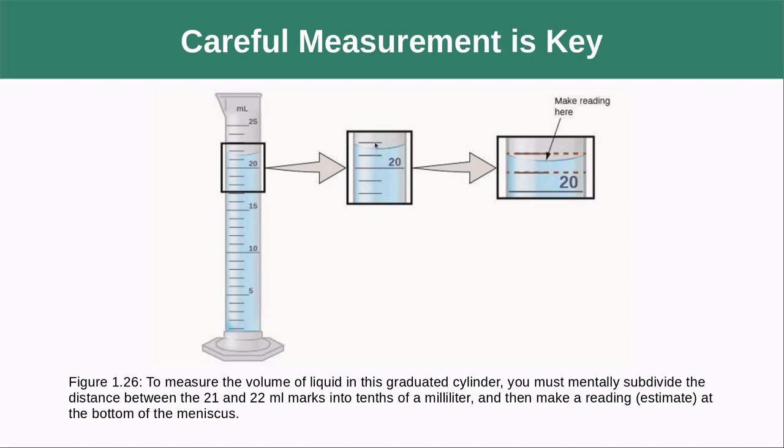We get to estimate between the two. So I could say maybe that's a little closer to 22, so I can say maybe it's like 21.7 or something like that. So I get one estimate between the graduations, and that is the best that I can do using this instrument.